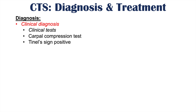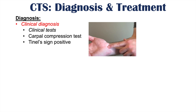Clinicians can also perform the Tinel sign, where they tap on the area of the wrist where the median nerve runs through. If tapping on that area produces numbness and tingling sensation in the median nerve distribution — the thumb, forefinger, middle finger, and half the ring finger — that is a positive Tinel sign.